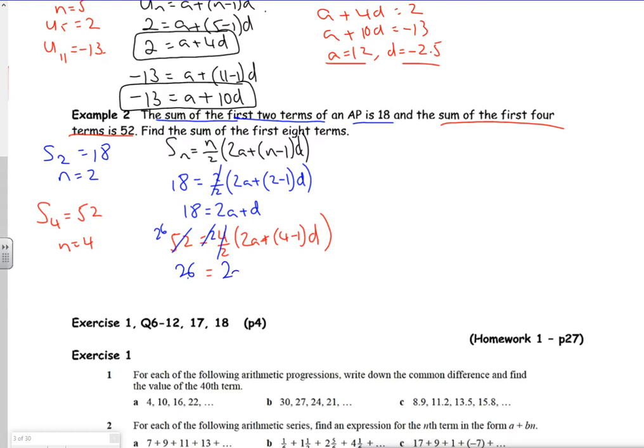Once again using simultaneous equations, I want it as x's and y's equals numbers, so 2a plus d equals 18 and 2a plus 3d equals 26. So I've put that straight into polynomial.